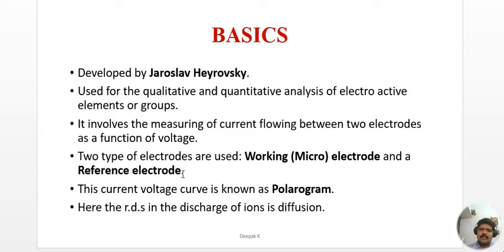For a particular reaction to take place at an electrode surface, the rate-determining or slowest step is assumed to be diffusion — meaning the diffusion of ions from the bulk of the solution to the electrode surface. This is considered the rate-determining slowest step.